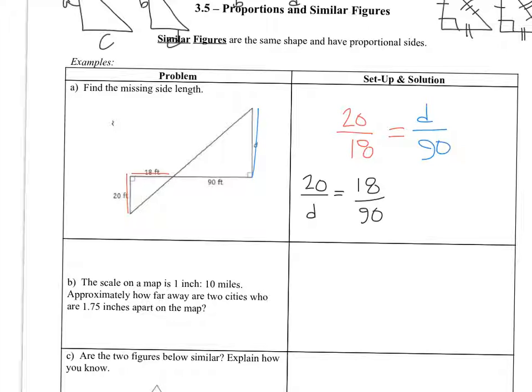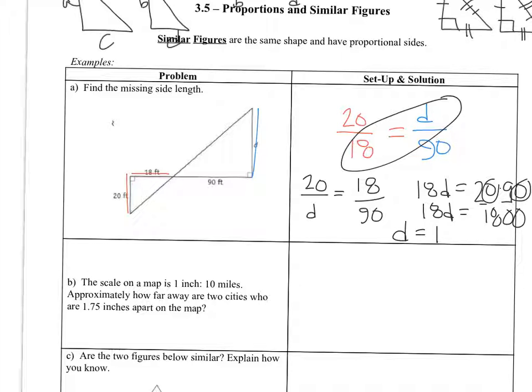So I'm going to cross multiply. If I cross multiply in this one or this one, I'm still getting the same answer. So I cross multiply. So it's 18 times D equals 20 times 90. So this is 18D equals 2 times 9 is 18. And then 2 zeros because it's 100. So D equals 100.